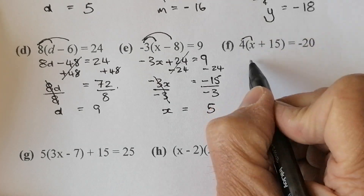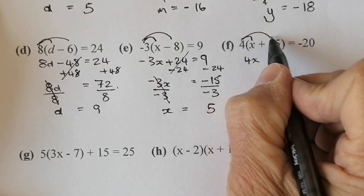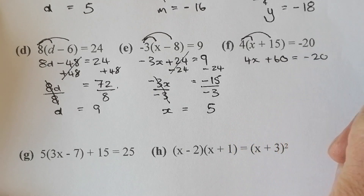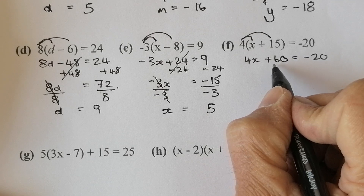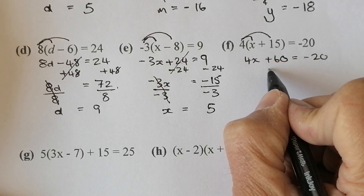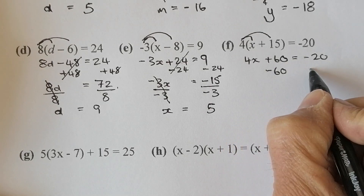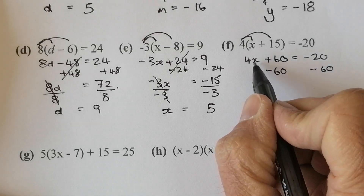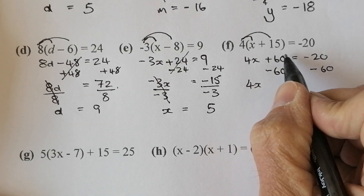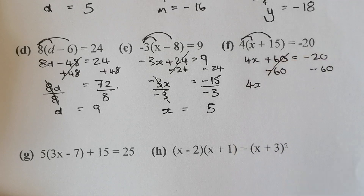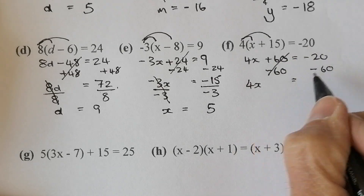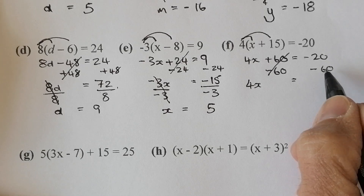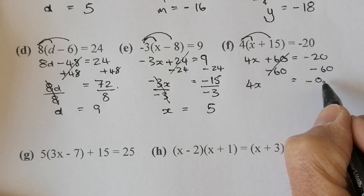Multiplying this bracket out: 4x. It's going to be 60. And that equals minus 20. I'm going to get rid of the 60 on this side — so I'll take 60 away from both sides. What I'm left with on the left-hand side is just 4x, because that equates to 0. And minus 20 take away another 60 gives minus 80.